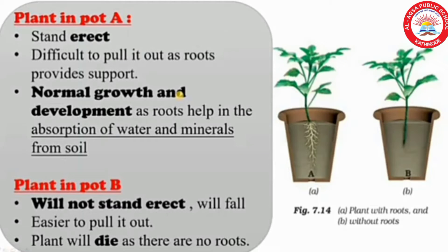Now we can discuss one activity. For this activity, we have to select two plants of the same kind from an open ground and dig them out. We have to take care that their roots do not break. Plant one of the plants in the soil in pot A. Cut off the roots from the other plant and plant it in the soil in pot B. Water them regularly.